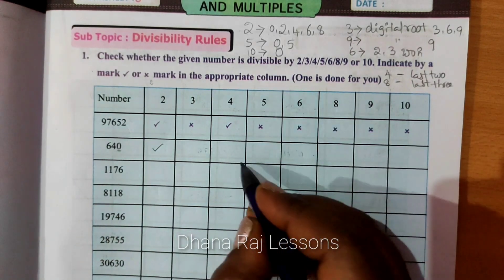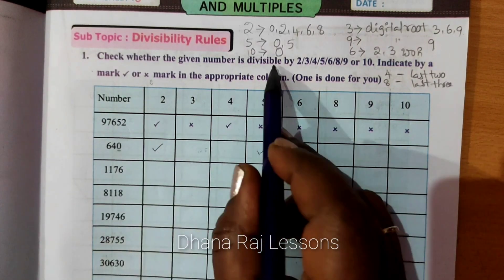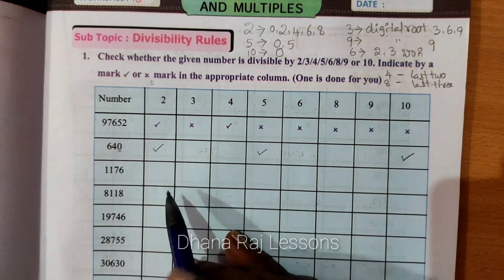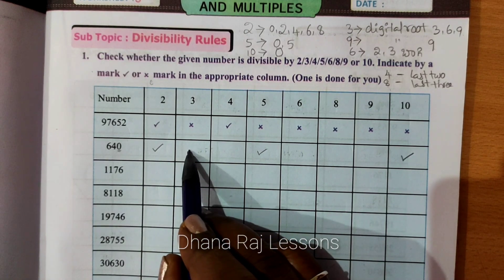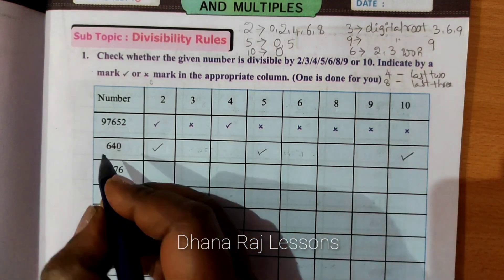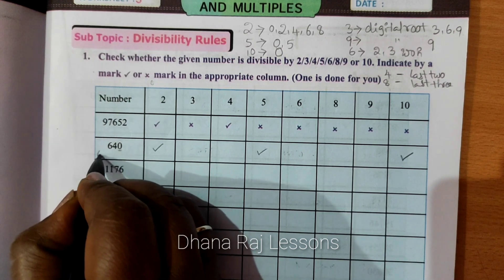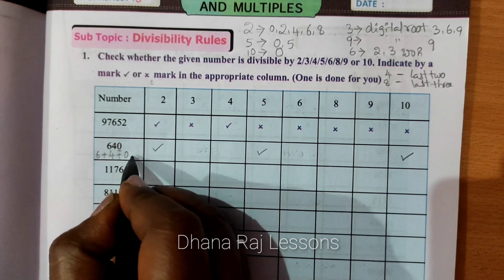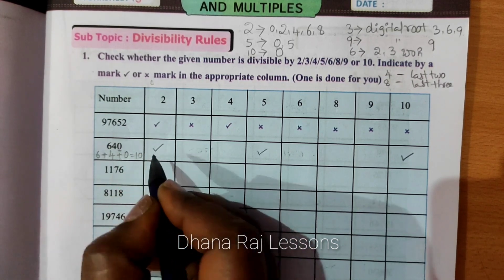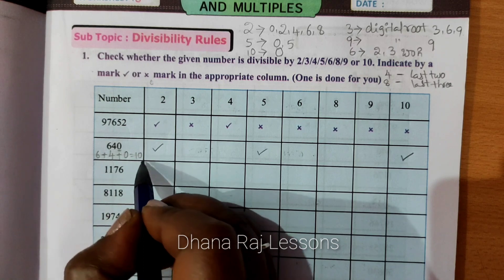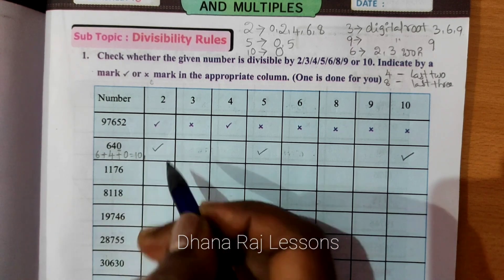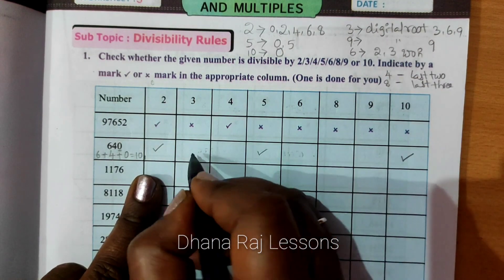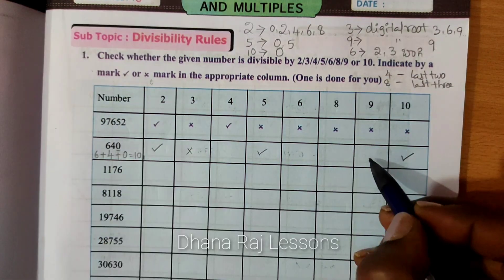We have 5. Next, for divisibility by 3, we use the digital root. For the digital root, we add the digits: 6 plus 4 plus 0. Then 1 plus 0 plus 1 plus 8. So when the sum is divisible by 3, it should equal 3.